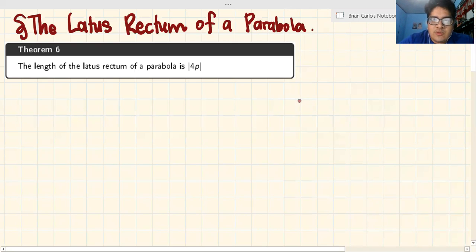Previously, we have defined that the latus rectum is a chord in a parabola. For example, this is the parabola. This is a chord in a parabola that passes through the focus. That's the latus rectum. Now, let's define a property that is essential to the parabola. And this is summarized in a theorem.